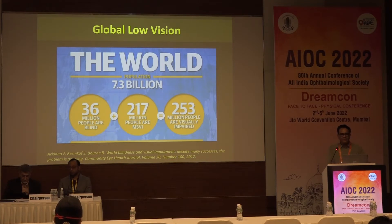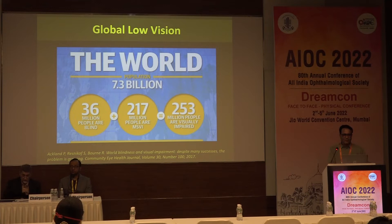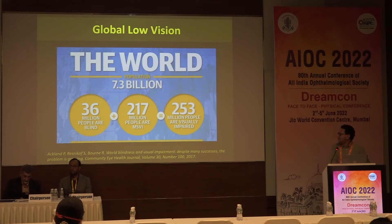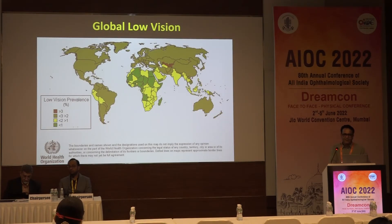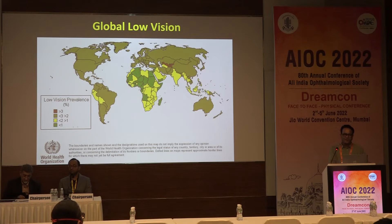A recent study by WHO has demonstrated that there are 253 million people who are visually impaired, out of which 217 million are moderate to severely visually impaired and 36 million people are blind. This global map indicates that the prevalence of low vision in India is 1.6%, placing it in the moderate prevalence category.